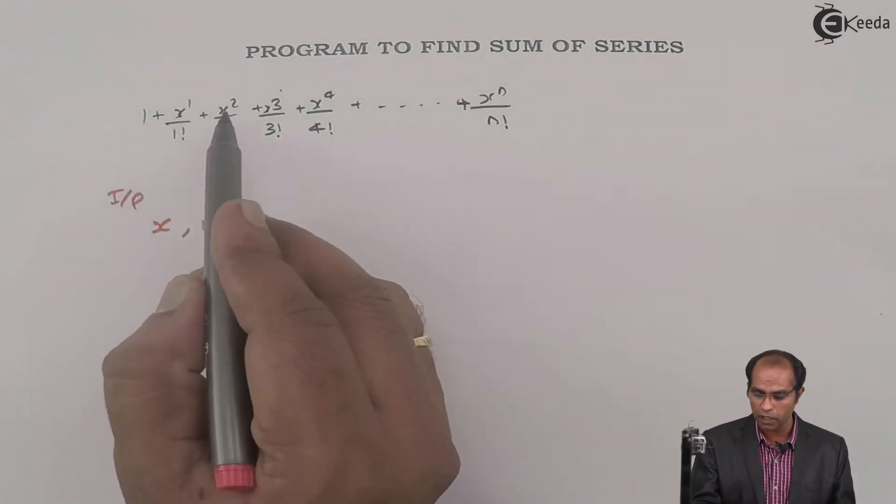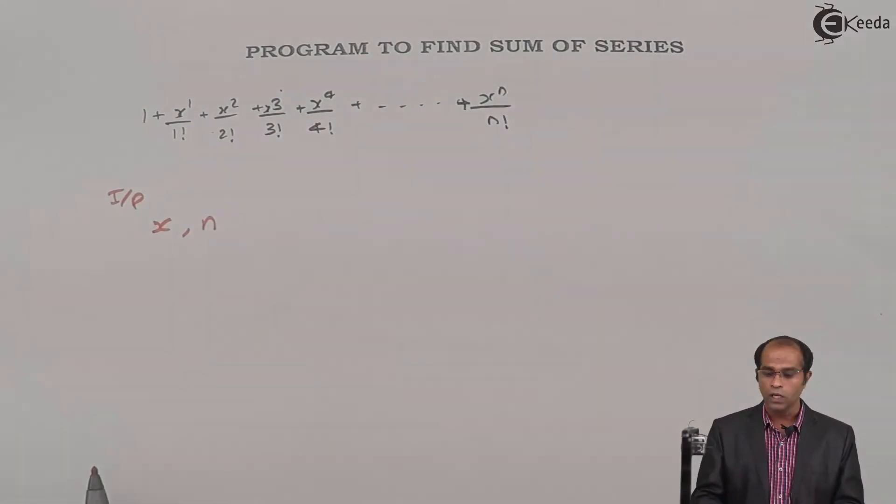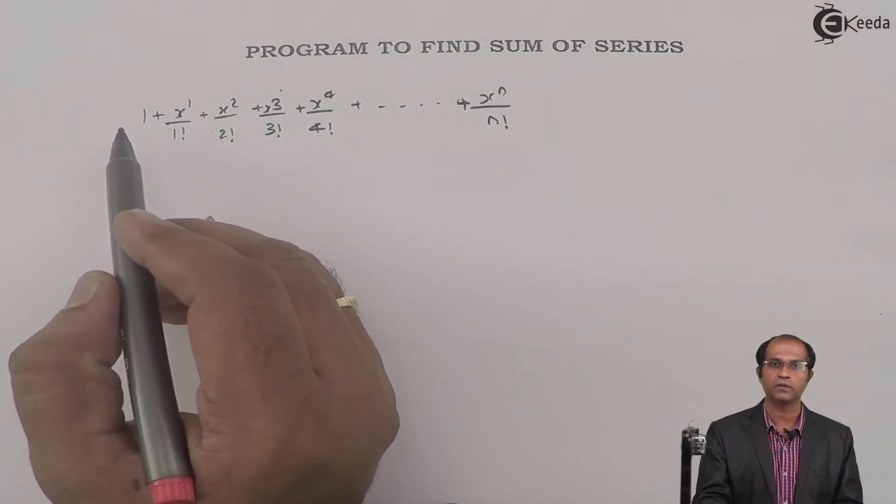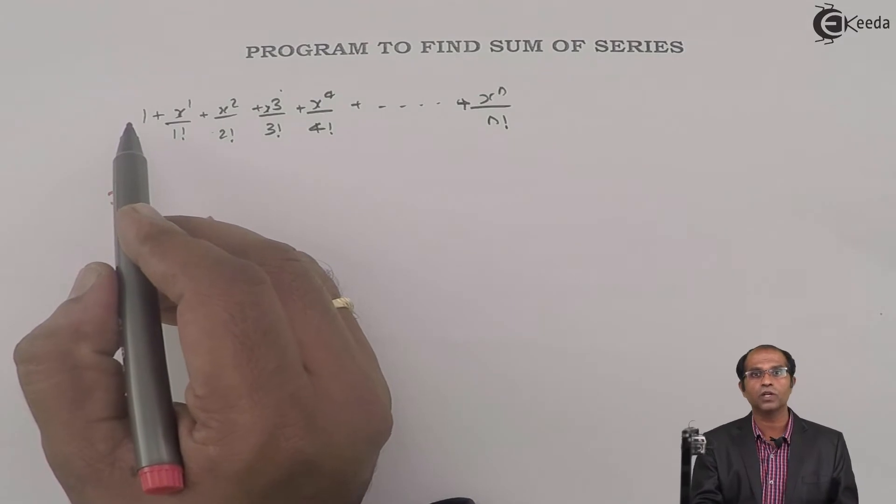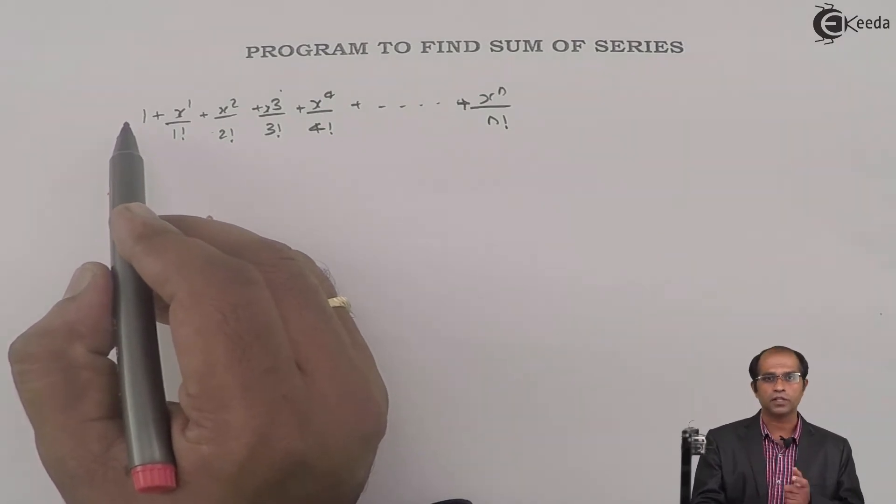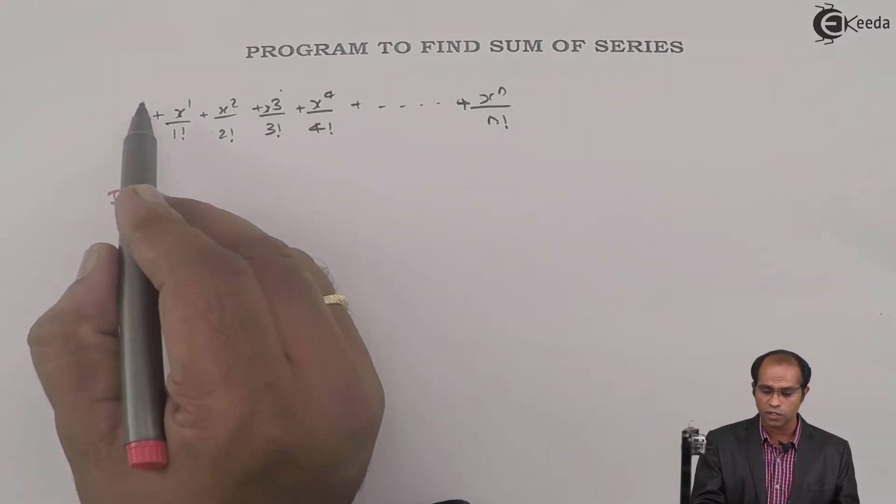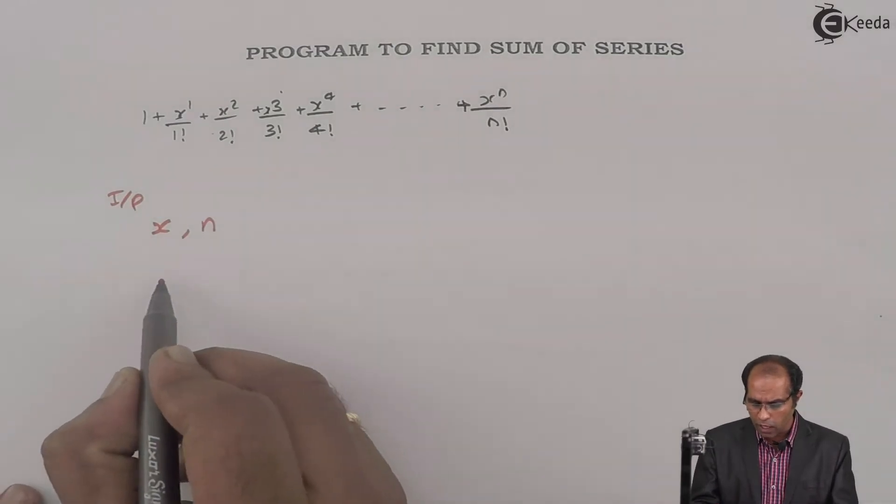Even the first term can be expressed as a power. Don't you feel that this 1 can be written as x^0/0!? x^0 is 1 and 0! is 1, so ultimately this term can also be reduced as x^0/0!. How do I do it using functions? I'll take a numerator as nr.